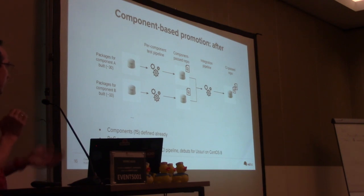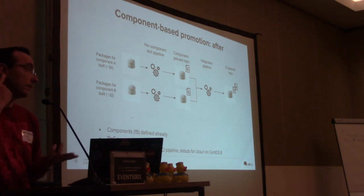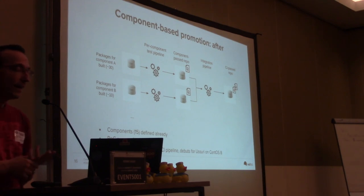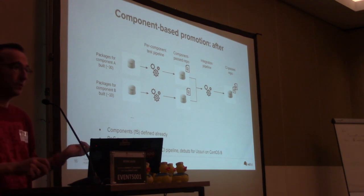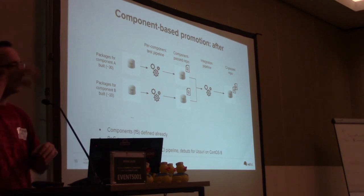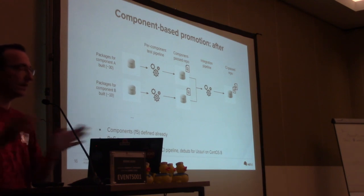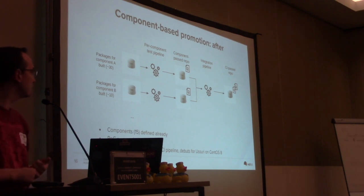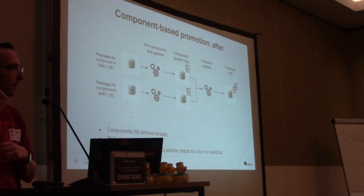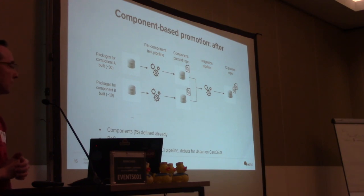Implementing this has required changes in several of our tools. First, we needed to add support in DeLorean, our continuous packaging tool, to split whole repositories into components and deliver different repositories. Then we created an initial proof of concept — the jobs are working. Now we are in the middle of setting up the whole pipeline and making sure it works in time for Usuri, because we want to release this for Usuri on CentOS 8. There are no plans to backport this to Train and earlier — those will keep using the traditional pipeline.